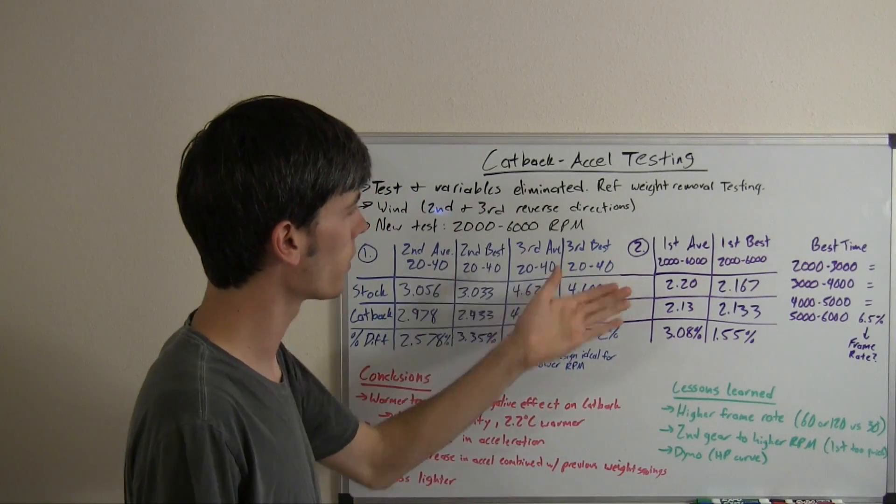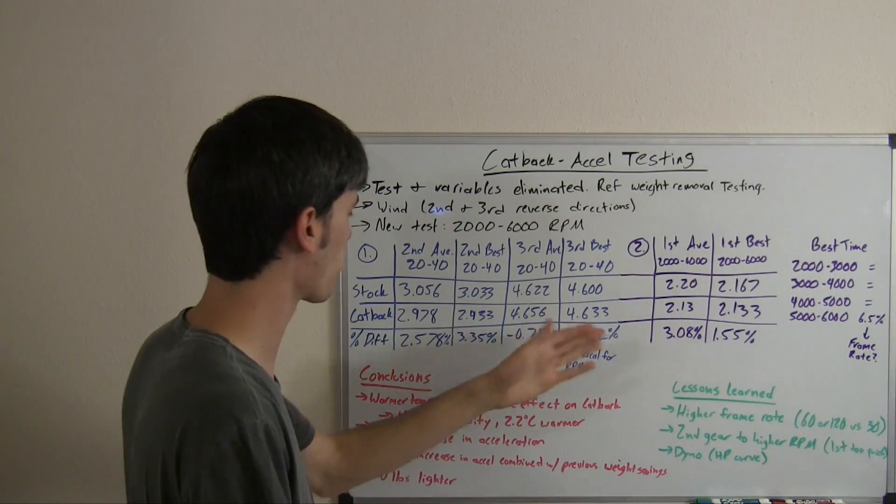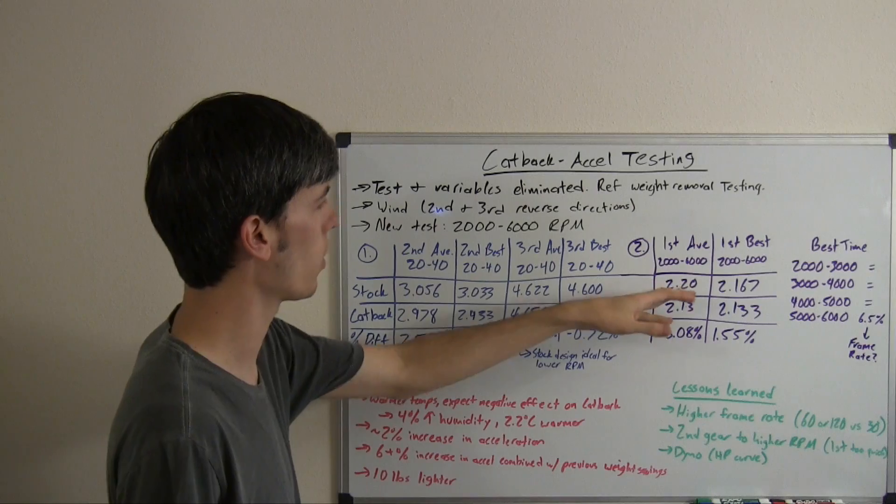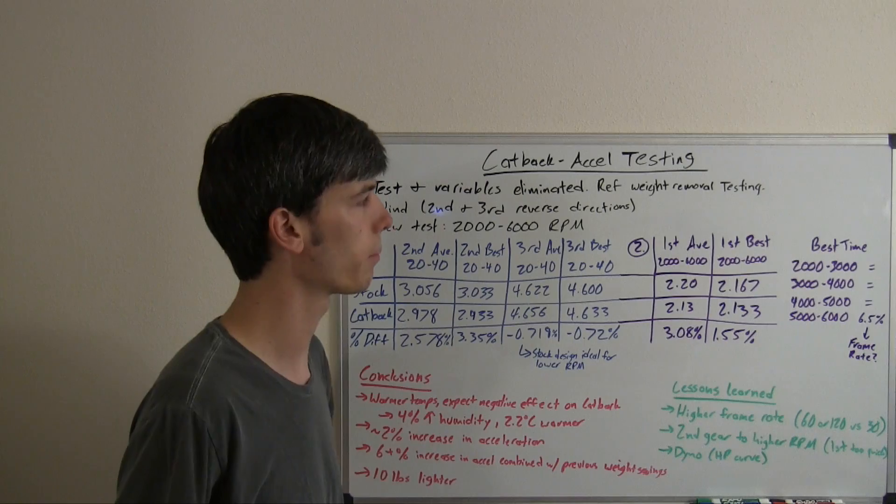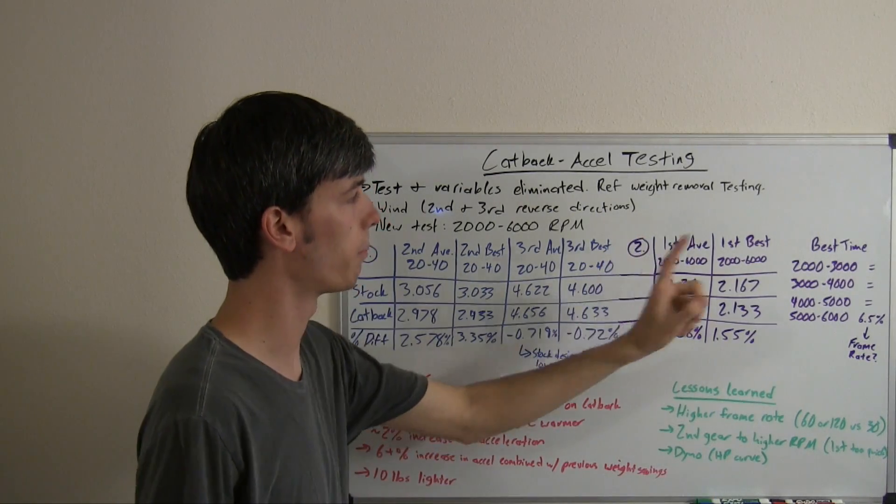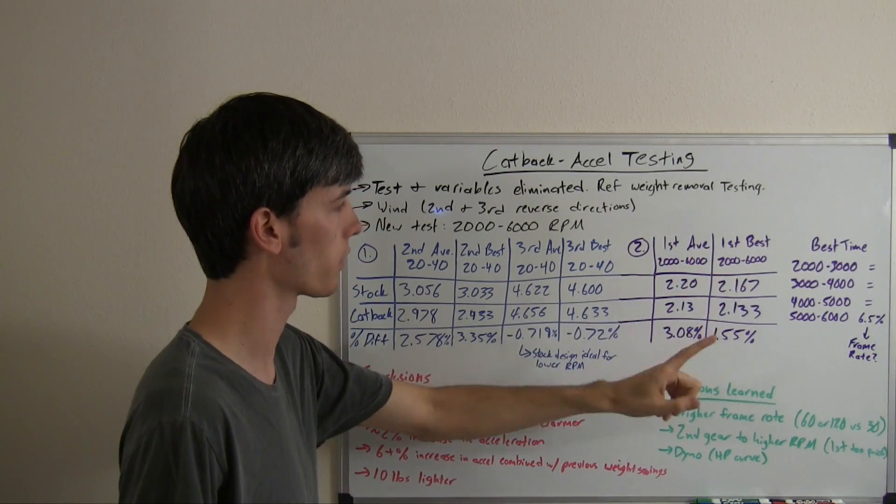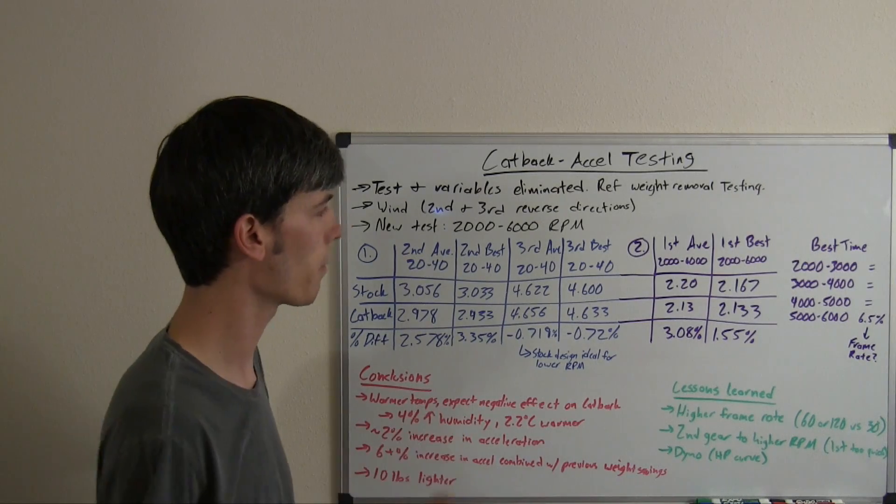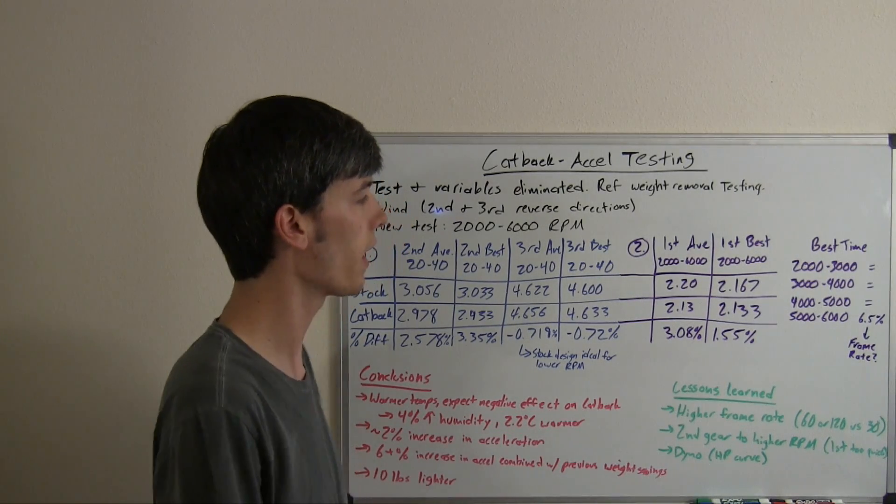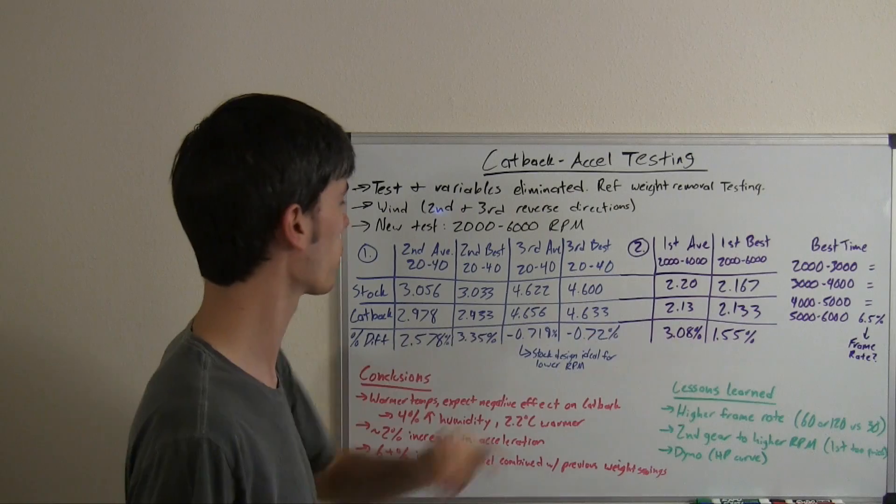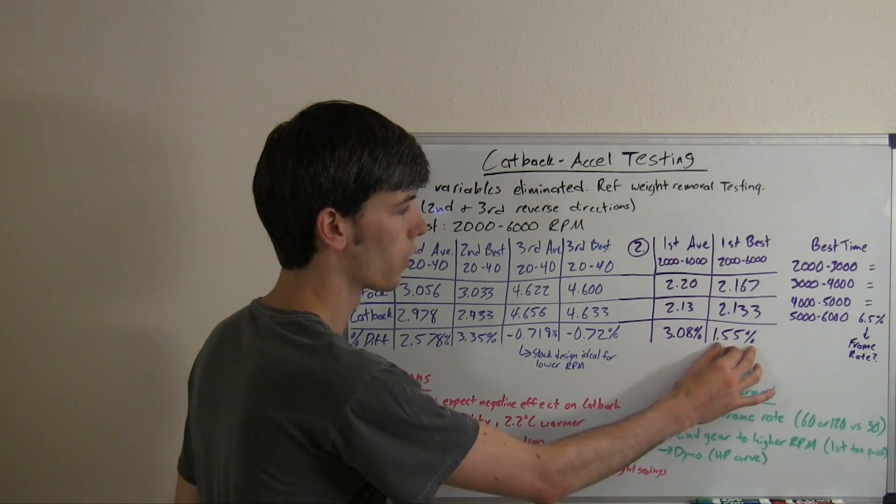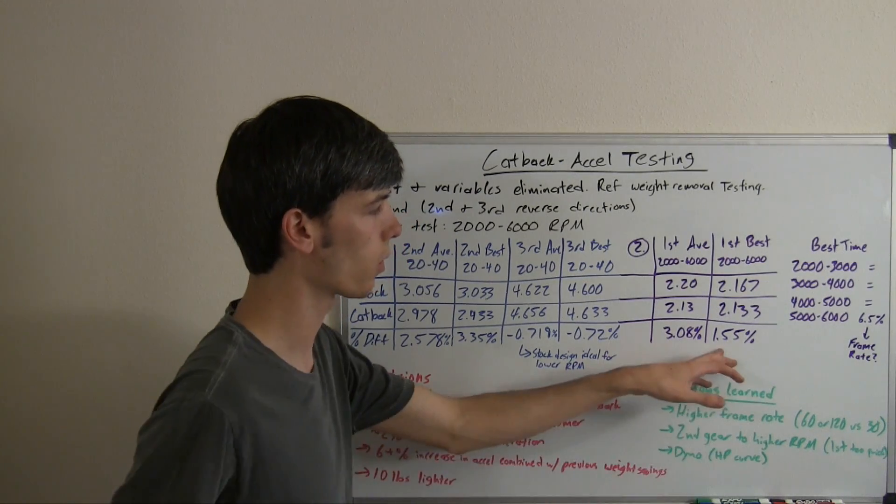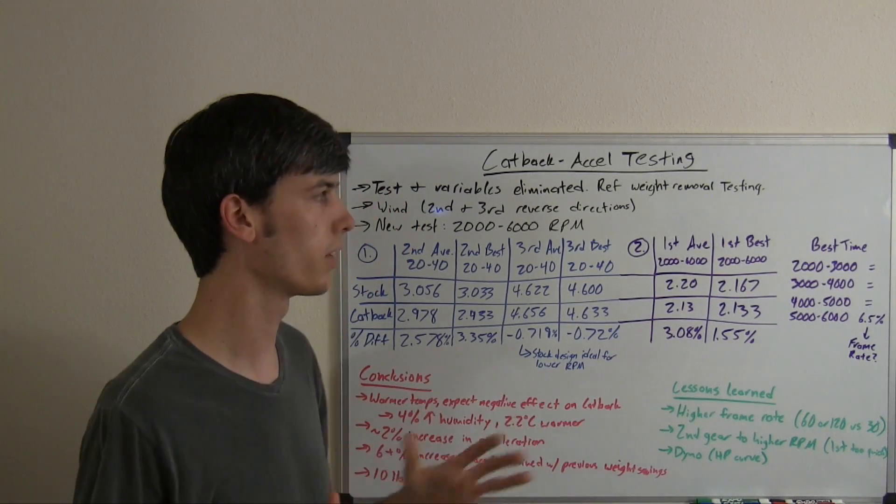As we saw there, there actually was an increase in the acceleration for the cat-back exhaust, 2.20 average time for stock versus 2.13 for the cat-back, giving a 3.08%. If we take a look at the best run possible for the stock versus the best run possible for the cat-back, we've got 1.55%. The stock did have a good run in there, and so it tells you that your worst case may be around about a 1.55% increase in acceleration.